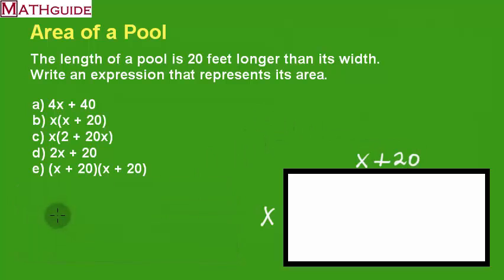So our area turns out to be X, the width, times the length, X plus 20. There you go. It looks like we have an answer, and our answer is B.